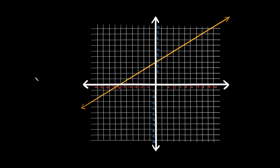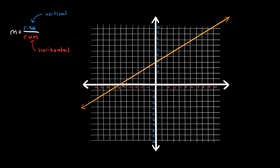Now that we have the basics, how do you actually find the slope of a line? The equation is really easy — it's m equals the rise over the run. The rise is your vertical change, and the run is your horizontal change. The variable m is the standard variable for slope, so whenever you see m, it means slope.